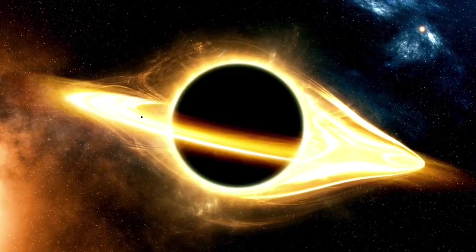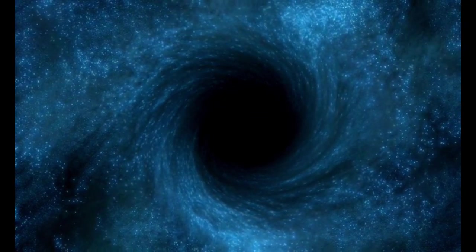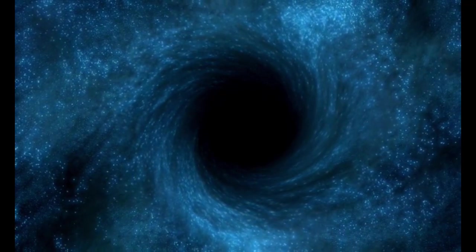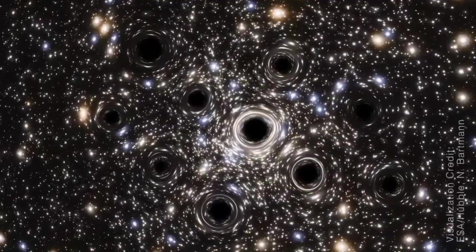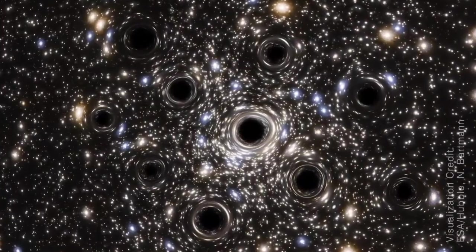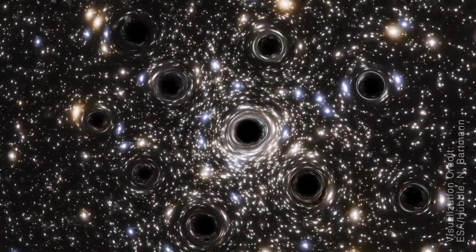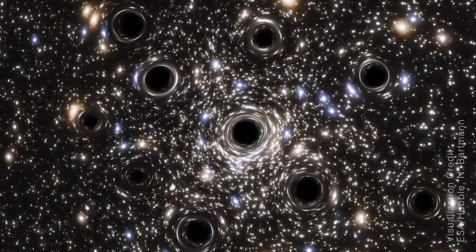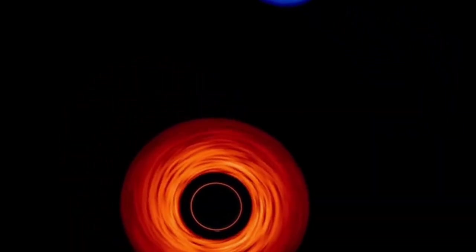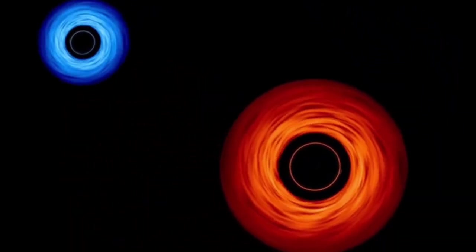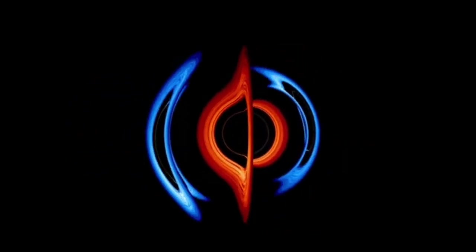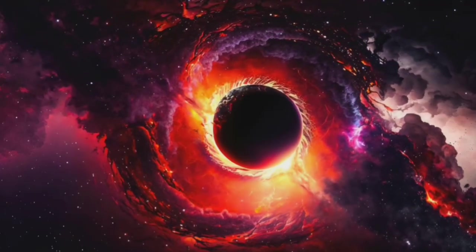The first of these layers is called the event horizon, which marks the point beyond which nothing can escape. Once something crosses this boundary, it is inevitably drawn toward the black hole. The second layer, known as the photon sphere, is where light itself gets trapped, unable to escape due to the powerful gravitational forces at play. Finally, there is the singularity, where all matter is compressed into an infinitely small point, a place where the very fabric of reality collapses and all known laws of physics break down.